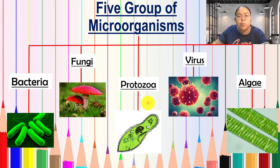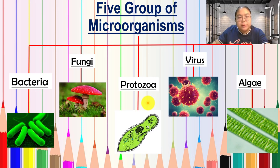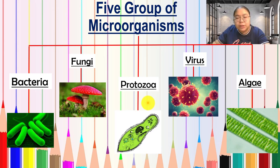From here we need to go through the characteristics of fungi, algae, and protozoa. The five characteristics we will cover are: nutrients — what they eat; shape — how they look; size; habitat — where they stay; and reproduction — how they produce the next generation.